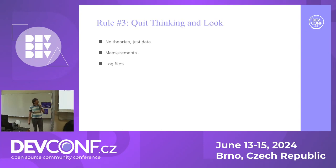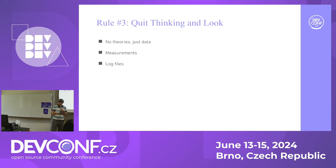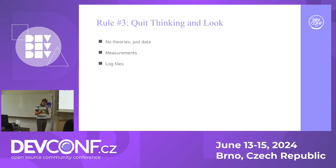Rule number three: Quit Thinking and Look. This is about needing data, not just theories. We are scientists — we need data to figure out what the problem actually is. In our company we have several development environments and a support channel where people write if there's a problem. We get messages like 'the environment is broken,' and then people jump in saying 'I think it's this' or 'no, it's that one.' But nobody actually took the time to look at the log outputs. They all just had theories.